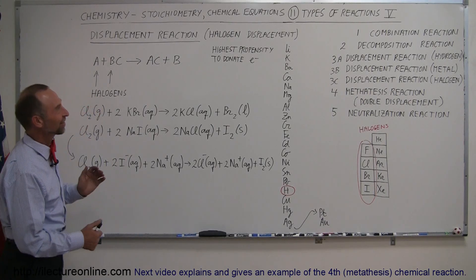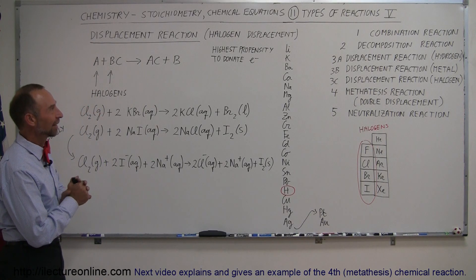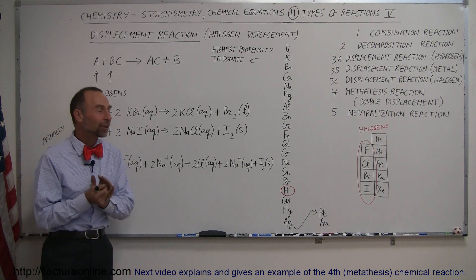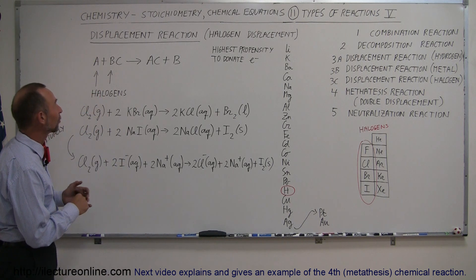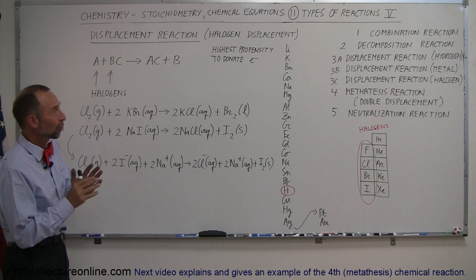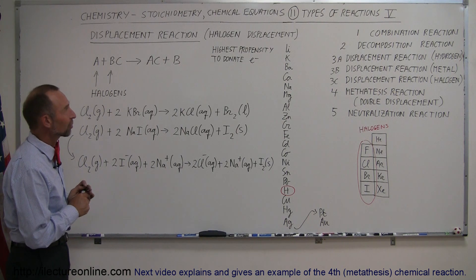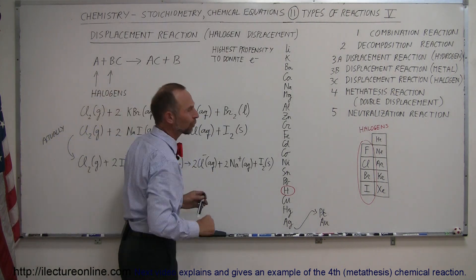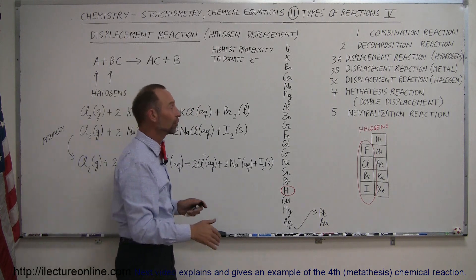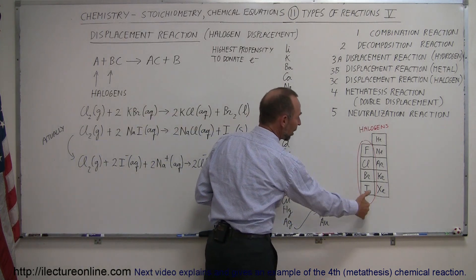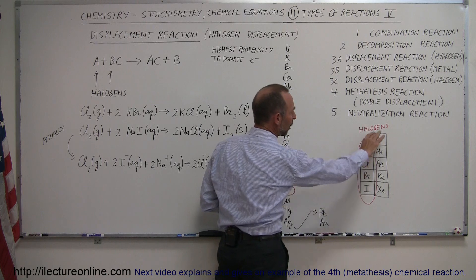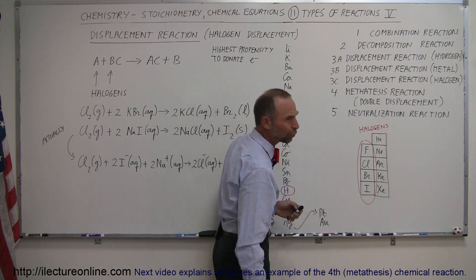Welcome to ElectronLine and here's our next video on how to look at chemical reactions and the types of chemical reactions. We're talking about displacement reactions, specifically the third type where halogens are being displaced. Remember, halogens are in the 7A column towards the right of the periodic table, right next to the noble gases.